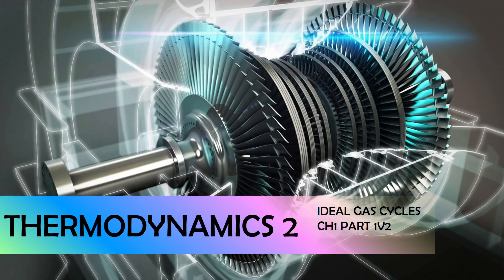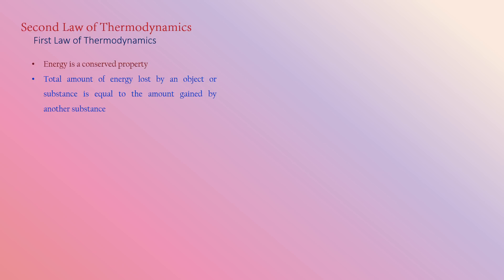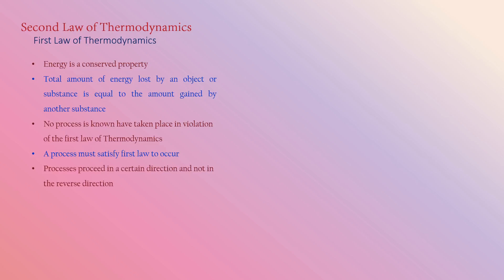In this part of Thermodynamics 2, we will be dealing with ideal gas cycles. Before that, we move on to the second law of thermodynamics and also the first law of thermodynamics. The first law of thermodynamics states that energy is a conserved property — the total amount of energy lost by a substance is equal to the amount gained by another. No process is known to have taken place in violation of the first law, and a process must satisfy the first law to occur.